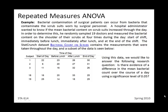Let's look at an example that may seem familiar because we looked at this same data set in the Chapter 2 notes. In this data set, we looked at the bacterial count on scrubs over four different time periods of the day. There was a random sample of 19 doctors, and the bacterial content was measured on a particular part of their scrubs four different times. The question we'd like to answer is: do we have evidence of a difference in the mean bacterial count over the course of a day?